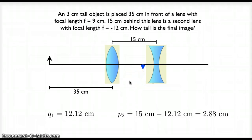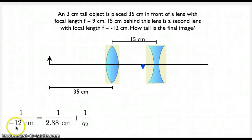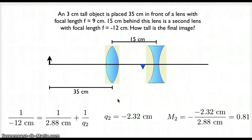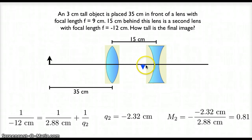With my object distance, I can now solve the lens equation for lens number 2, making sure I use negative 12 centimeters as my focal length. I solve for Q2 and get negative 2.32 centimeters. This negative value means that the final image is to the left, on the virtual side of lens number 2 — somewhere right around here. If I calculate my magnification for lens number 2 using Q2 over P2, I get 0.8. My image from lens number 2 will be the same orientation as the object for lens number 2, and it will be a little bit smaller.